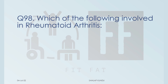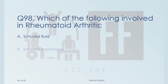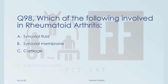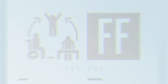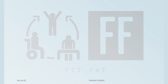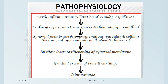Question number 19: which of the following is involved in rheumatoid arthritis? Option A: synovial fluid, Option B: synovial membrane, Option C: cartilage, and Option D: subchondral bone. Before getting into the answer, let's see the pathophysiology of rheumatoid arthritis very briefly.